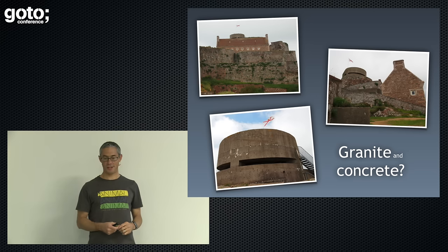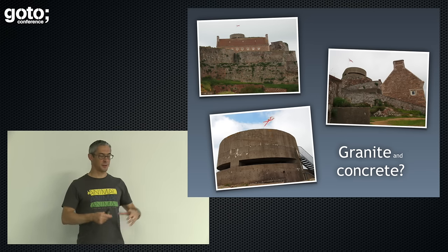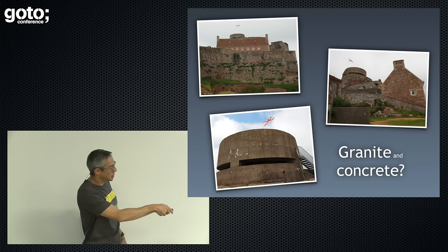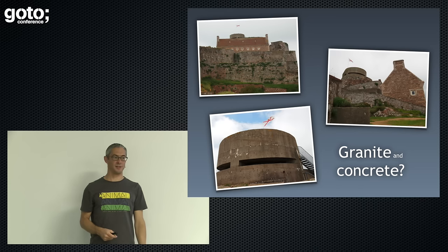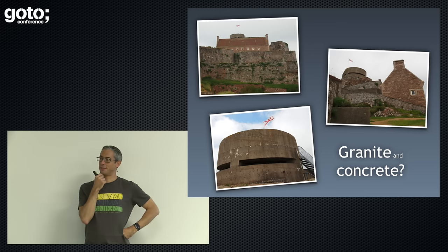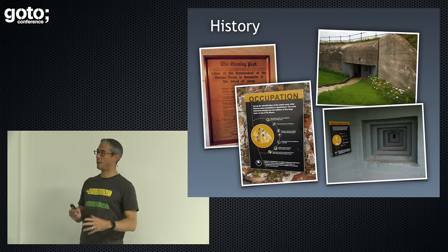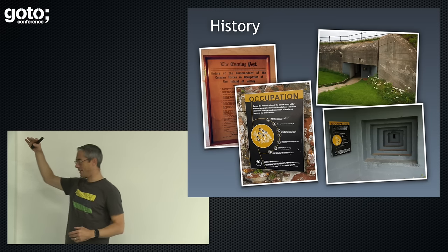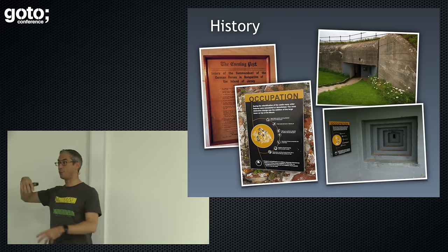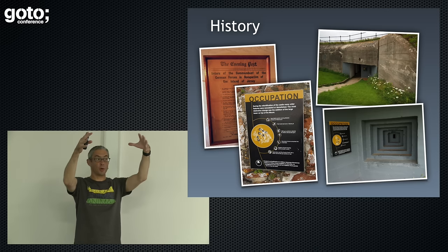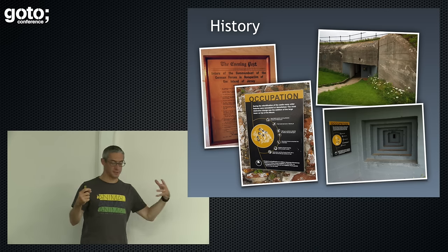When you walk around this castle and get to the top, things start to change. You've got this beautiful granite stone thing with a weird concrete thing stuck on top. History is important here. When you're walking around the castle, it tells you that in World War II, when the Germans occupied Jersey, they re-fortified some of the existing fortifications. That's what that big concrete thing is on top, along with lots of gun emplacements and so on.